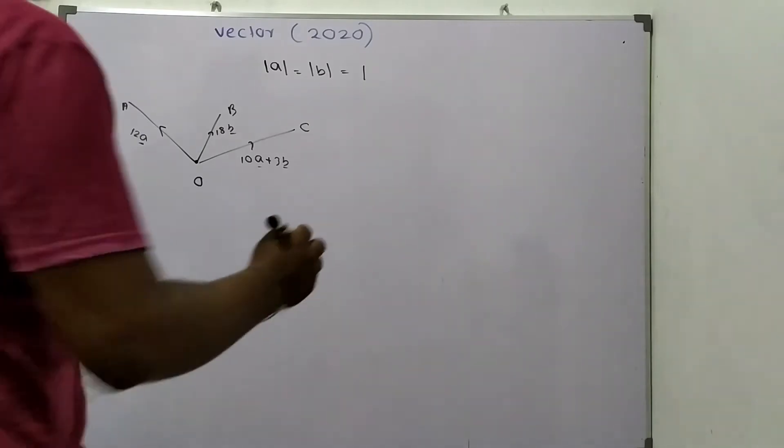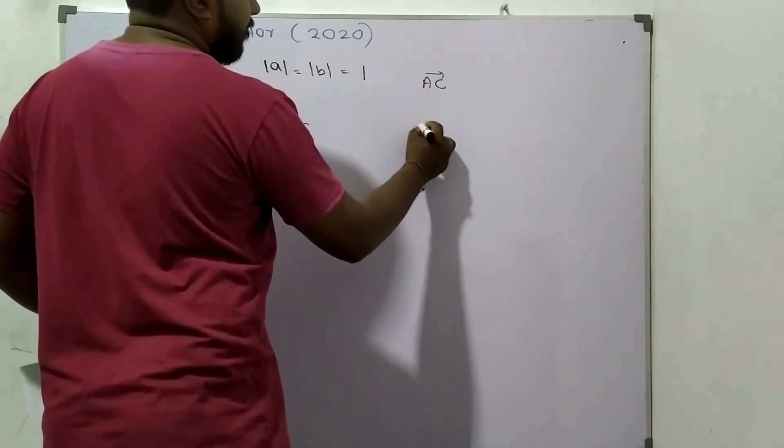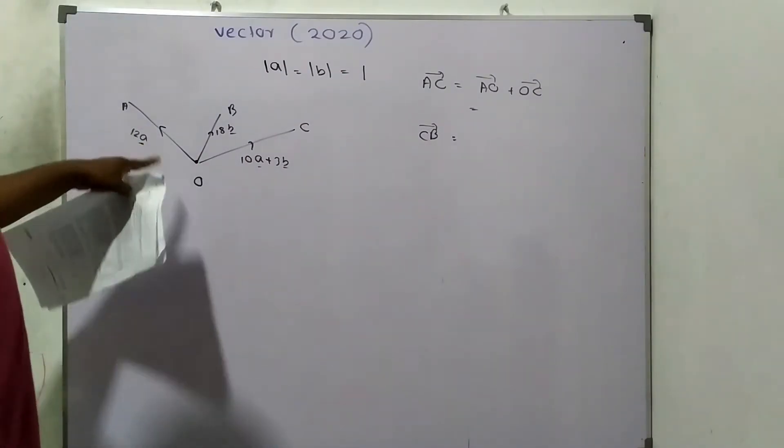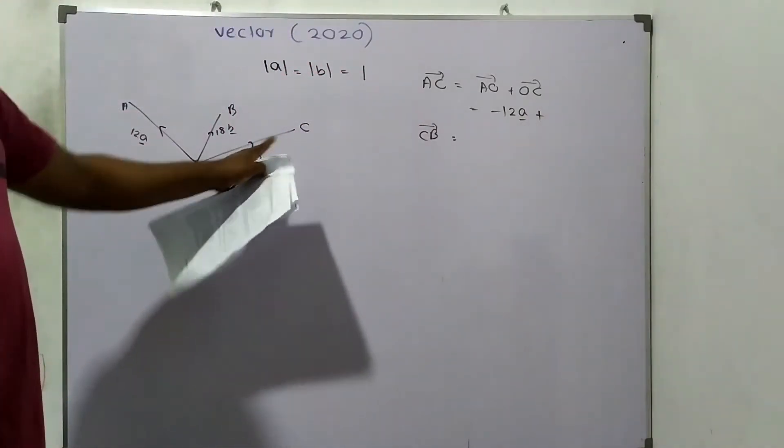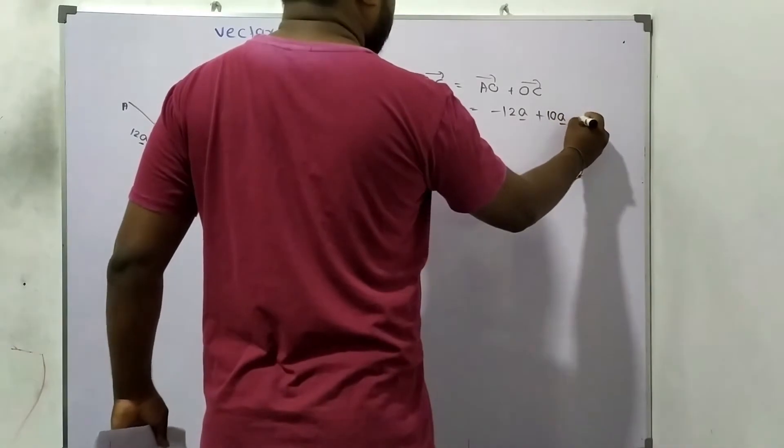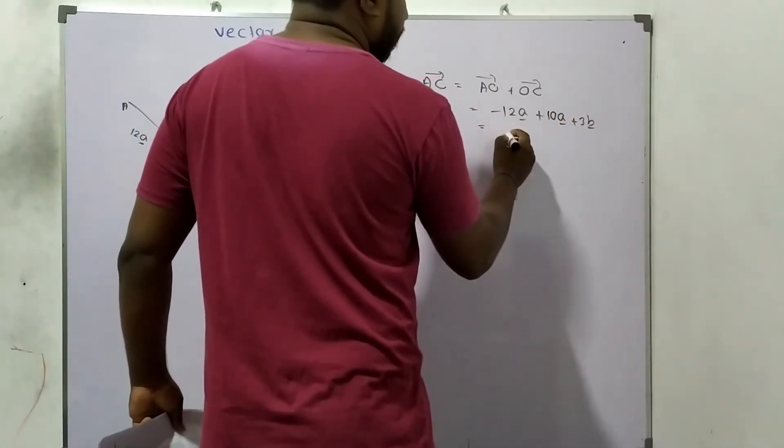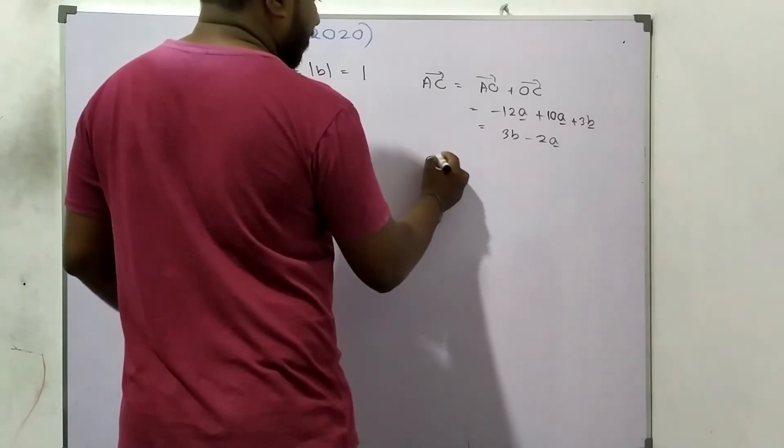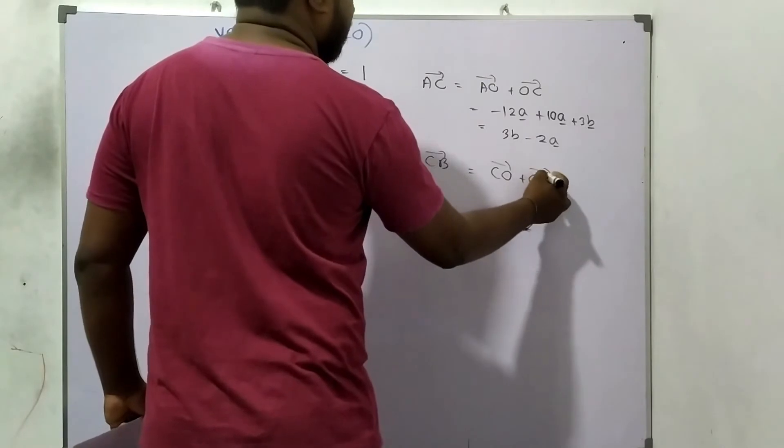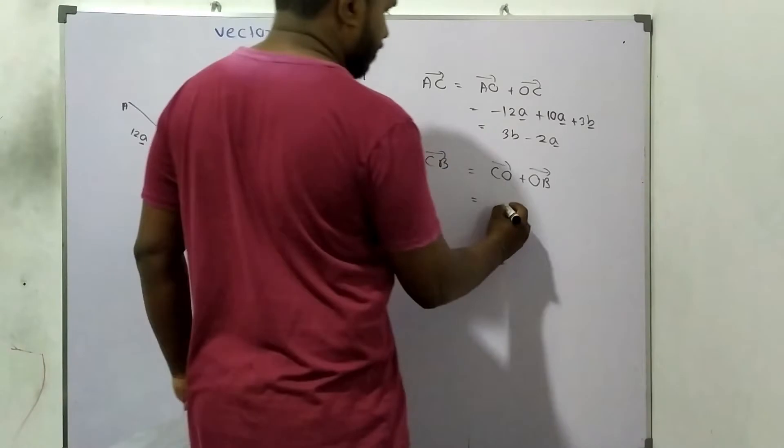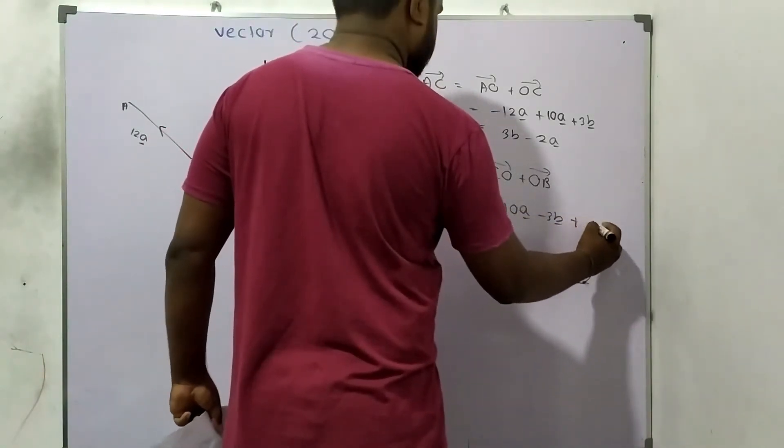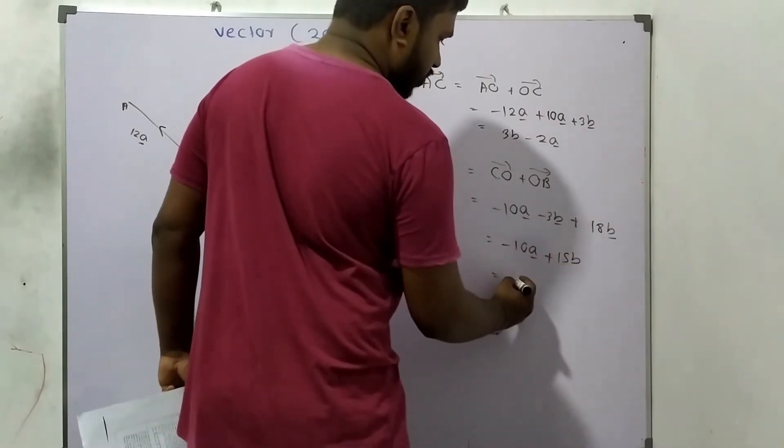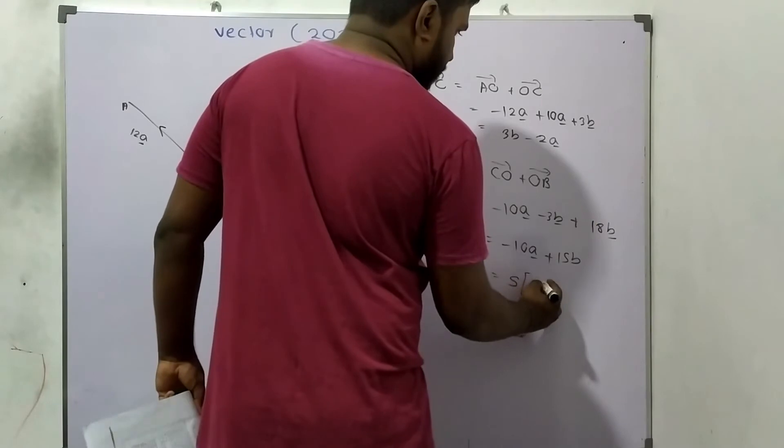Now AC equals AO plus OC. AO is minus 12A, OC is 10A plus 3B, so AC equals 3B minus 2A. CB equals CO plus OB. CO is minus 10A minus 3B, OB is 18B. You can pull 5 out to get 5 times 3B minus 2A. That's CB.